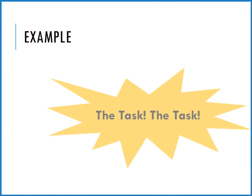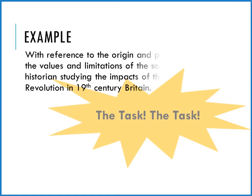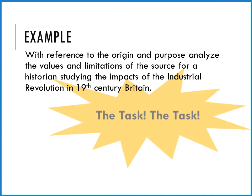Now you're like, oh my goodness, I got this, Ms. Michelle — and I'm like, sure, but you must remember you need to think about your task. Before you start evaluating the source, you need to think about the task, what you're trying to do. That gives you directions and helps you to be able to figure out the values and limitations. In this, I'm asking you, with reference to the origin and purpose, analyze the values and limitations of the source for a historian studying the impacts of the Industrial Revolution in 19th century Britain. That statement right there is what you need to make sure you have in mind all the time to follow.